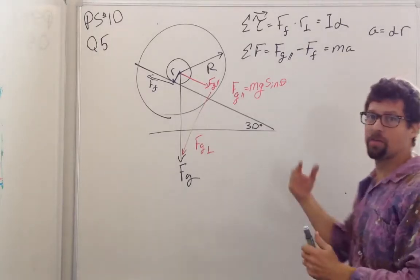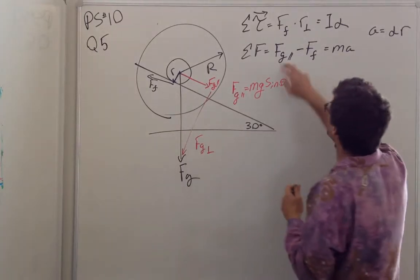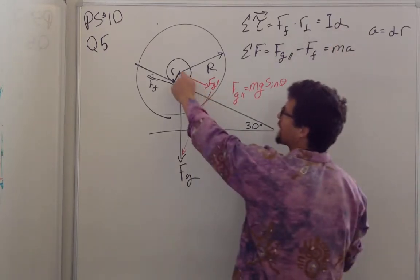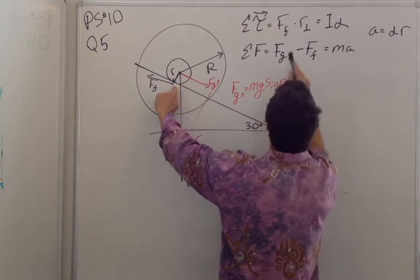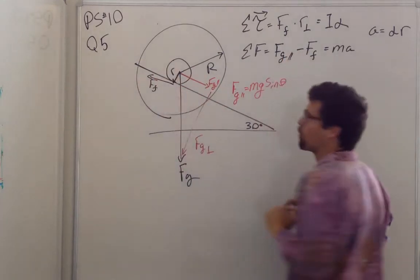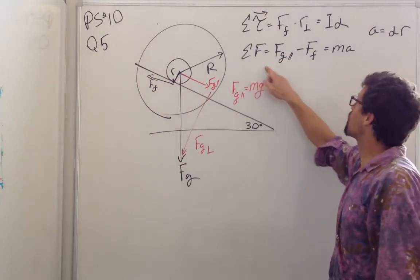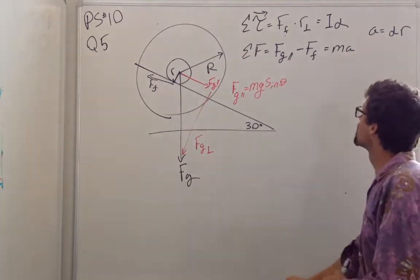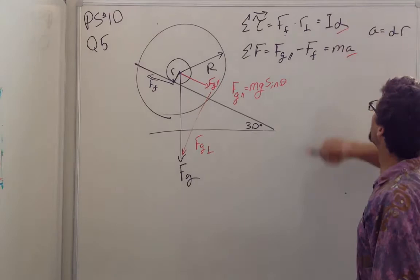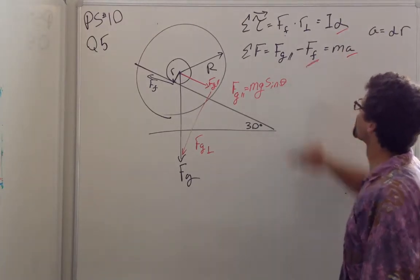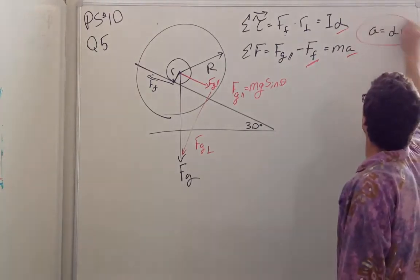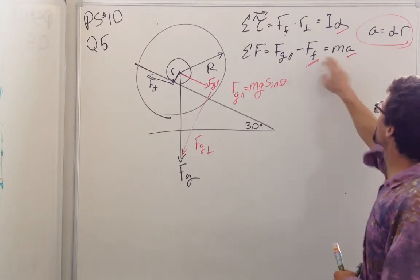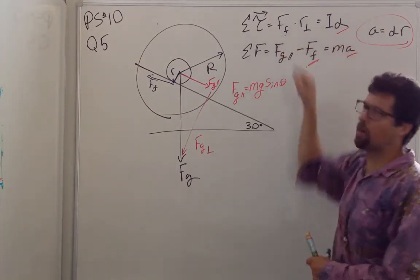So the way to solve this with dynamics is to take the sum of the torques is equal to I times alpha, and there's only one torque acting about the center of mass, and that's the force of friction times this small radius. And then use your sum of your forces, and now you've got three unknowns: acceleration, alpha, and the force of friction. But you have a third equation. You can substitute this into here, solve for the force of friction, put it in here, and then you've got one equation.